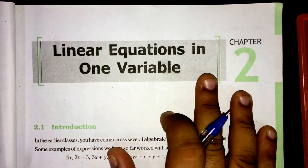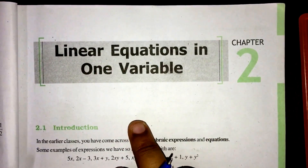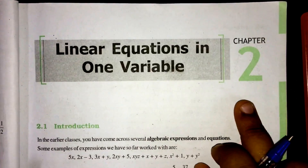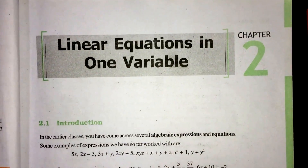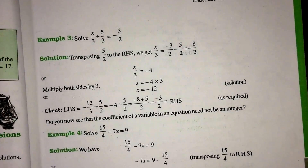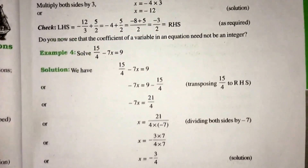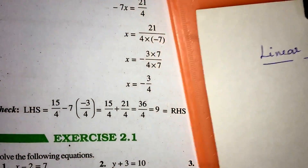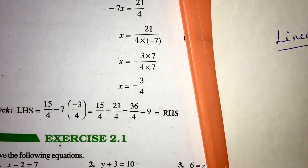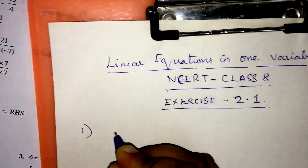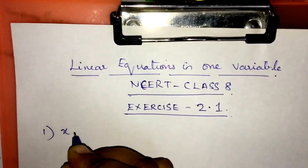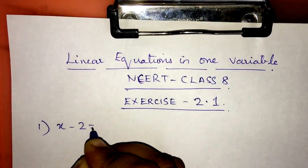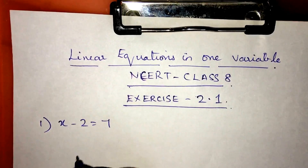Hi, this is Linear Equations in One Variable, Chapter 2 in NCERT Class 8 book. I am going to now do Exercise 2.1. The first sum: x minus 2 is equal to 7.